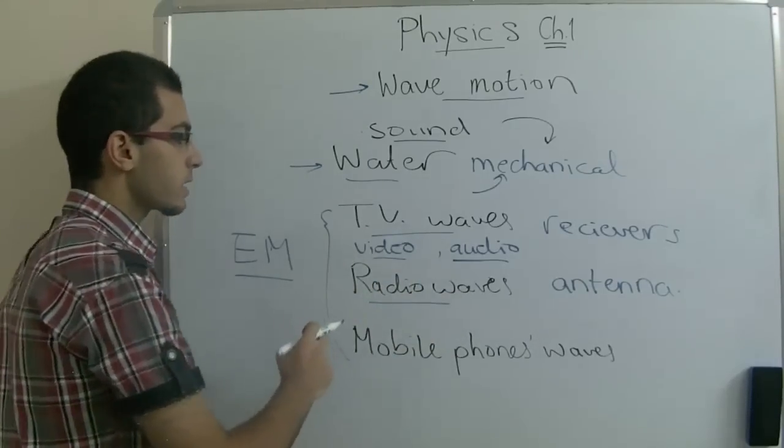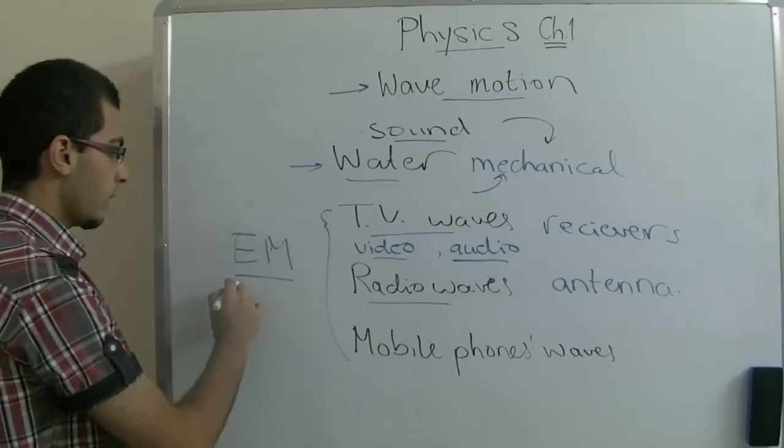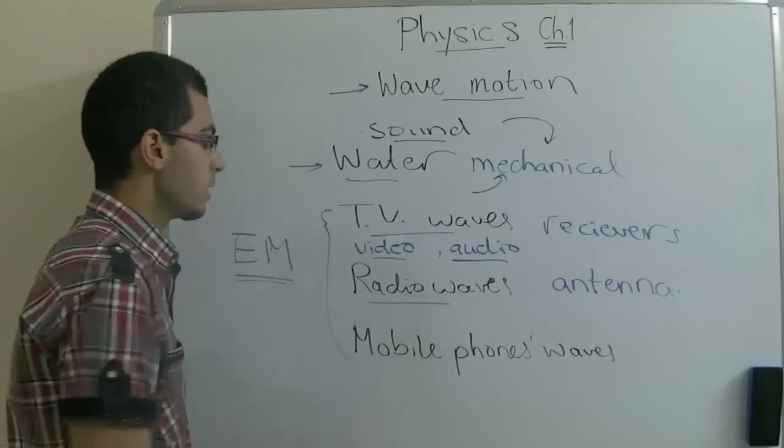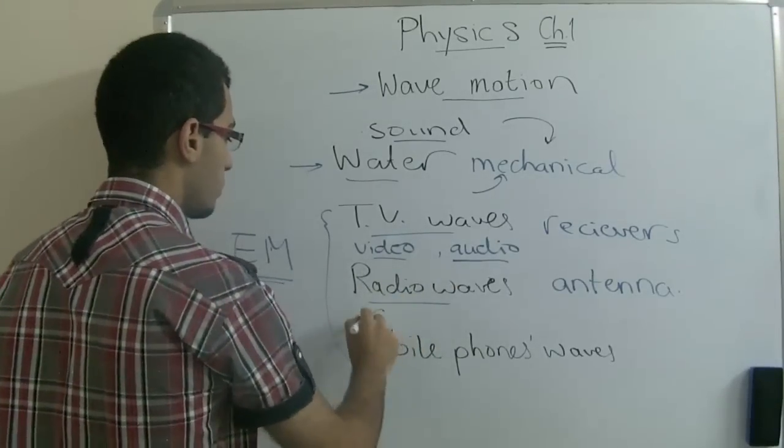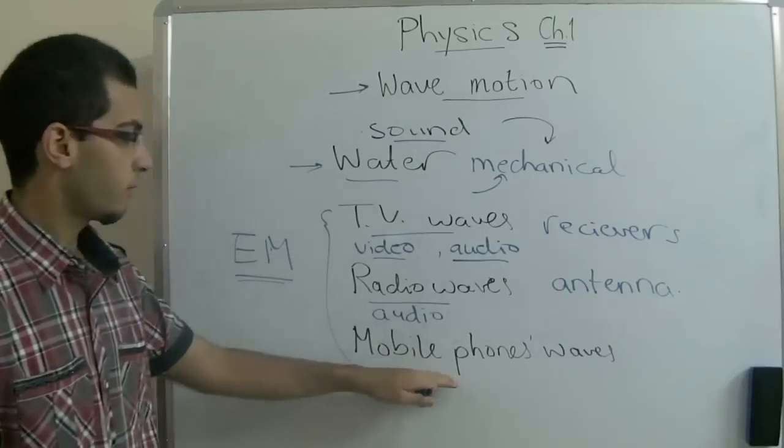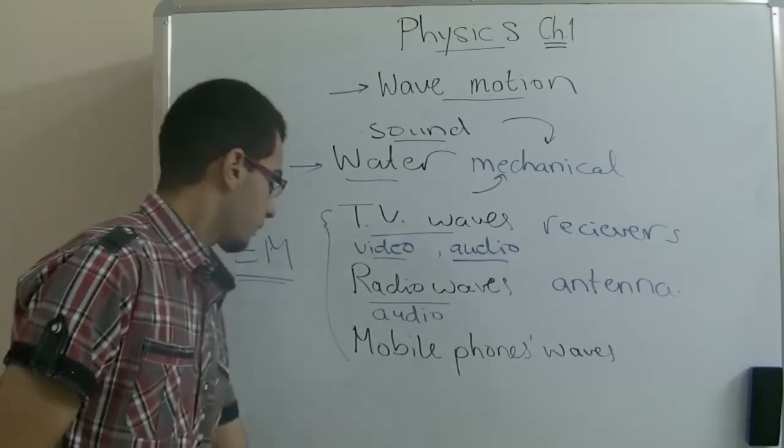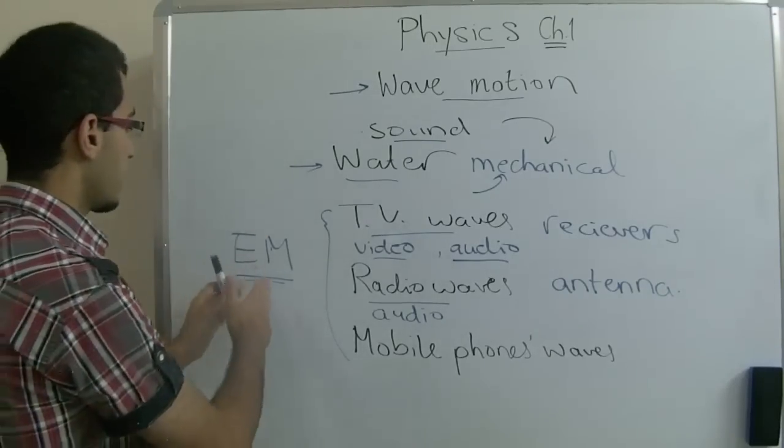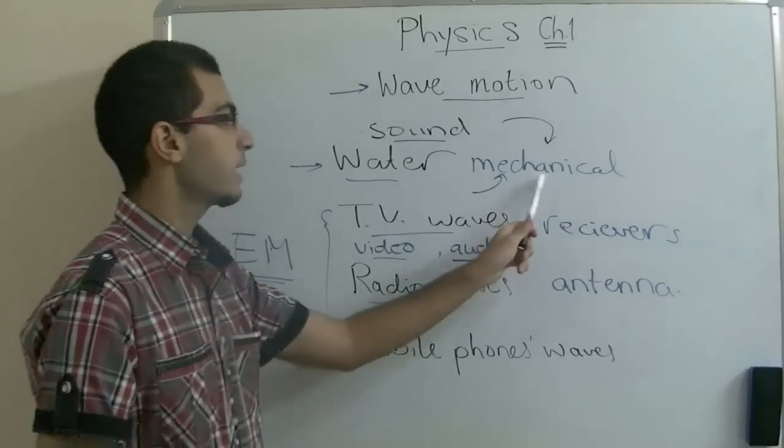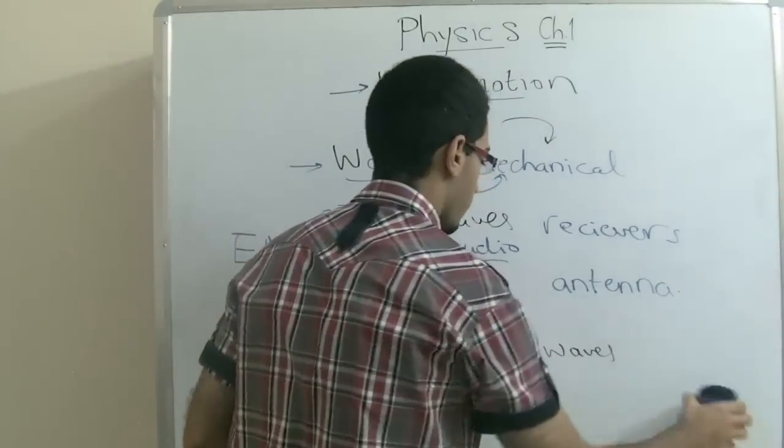For the radio waves, after the electromagnetic waves are changed into electrical signals in the radio, they are changed into audio so that you can hear the sound. The same thing for mobile phone waves. We know that electromagnetic waves don't need a medium to travel through, while mechanical waves need a medium to travel through.